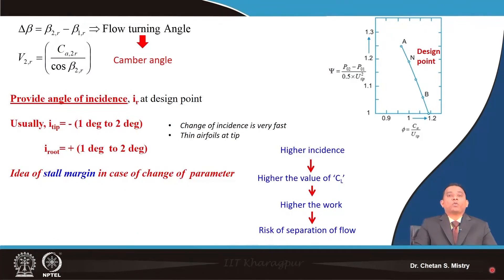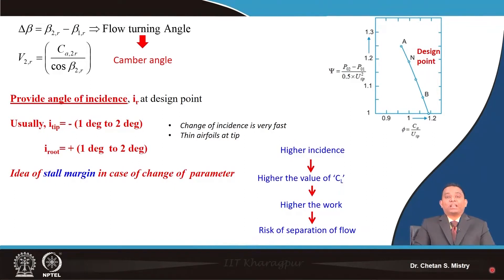Once we have done all these parameters in terms of calculation, the later stage is looking for delta beta, which is the blade turning angle. When the flow is entering at some blade angle beta 1, we started discussing about the introduction of the parameter called incidence angle. We realized that when we increase our incidence angle, we are increasing our lift coefficient, which is the characteristic of our aerofoil.